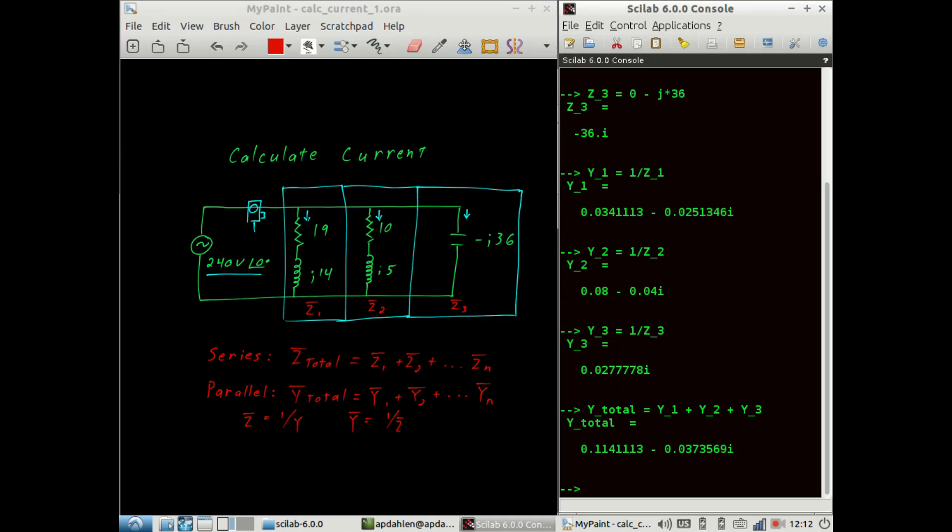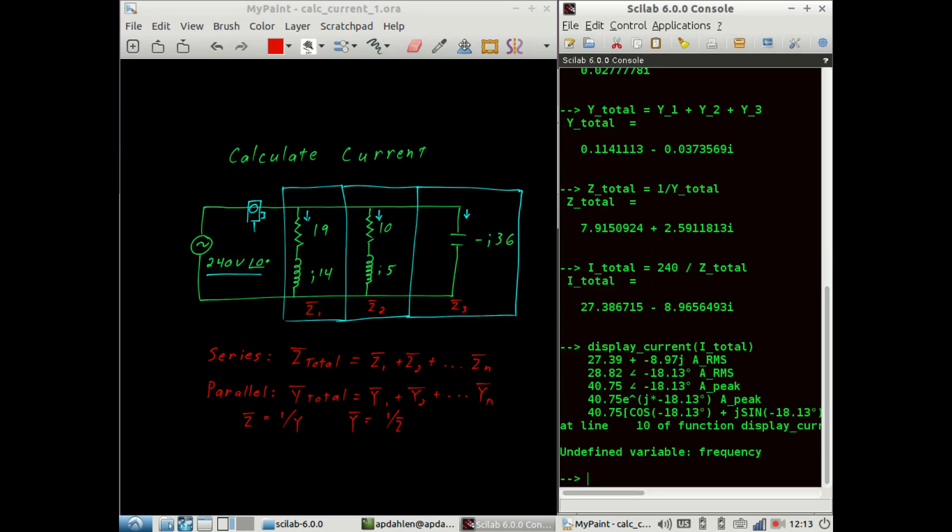And finally the total impedance is equal to the inverse of the admittance. The total current is then the source voltage divided by the total impedance. And I have a helper function that allows us to view current.